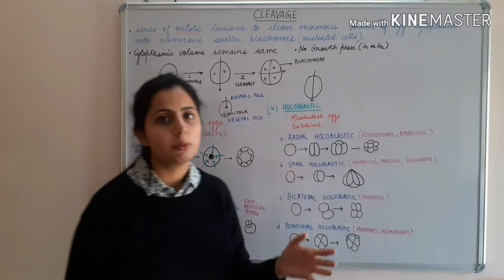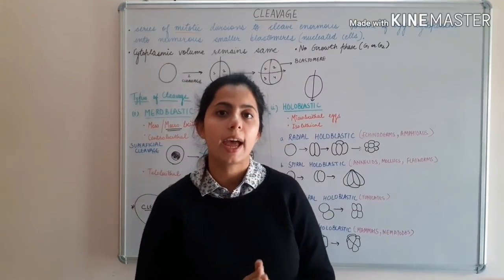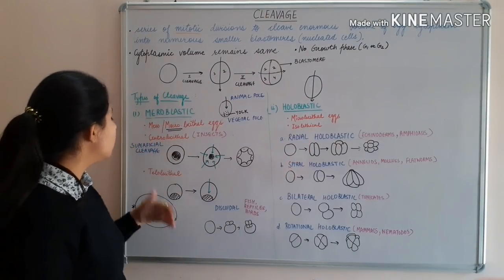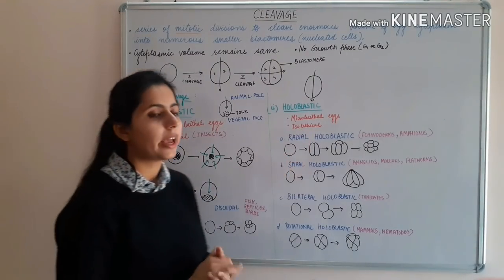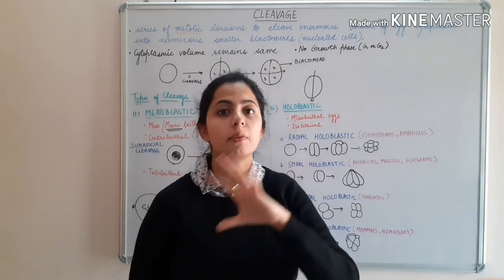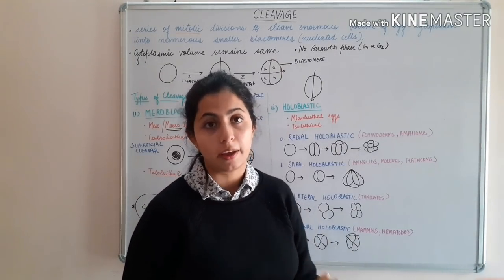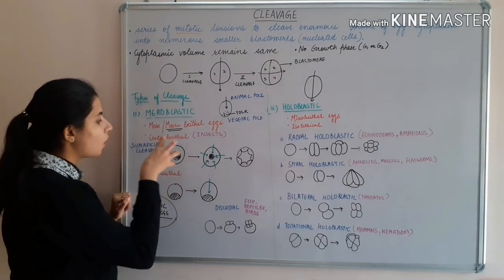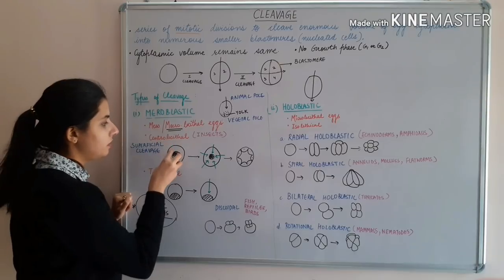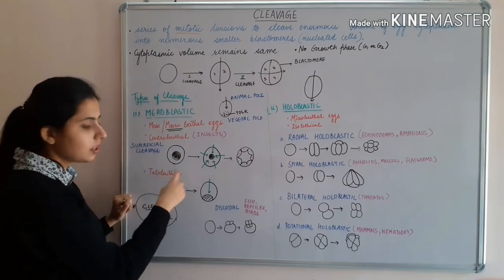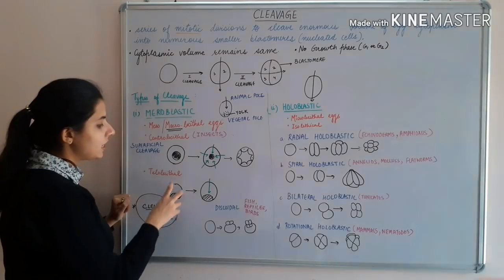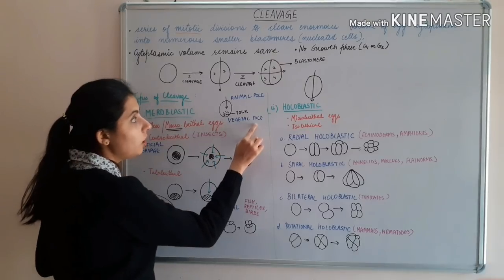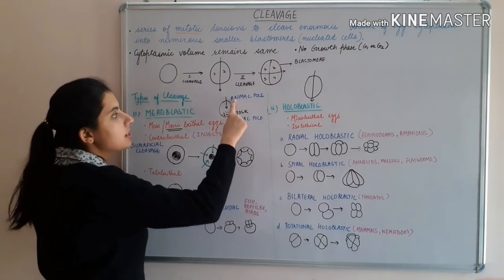According to the distribution of yolk content, eggs can be classified as isolecithal, centrolecithal, or telolecithal. In isolecithal eggs, the yolk content is evenly distributed throughout the egg. In centrolecithal eggs, the yolk content is concentrated towards the center of the egg. In telolecithal eggs, the yolk content is present at one side of the egg, known as the vegetal pole, while the other side is the animal pole.